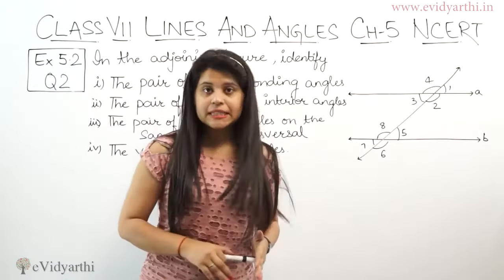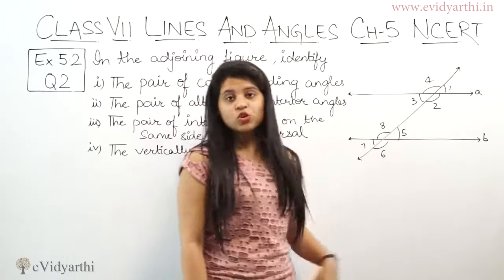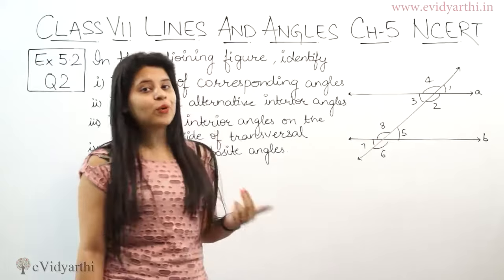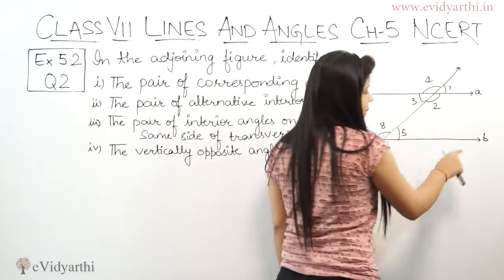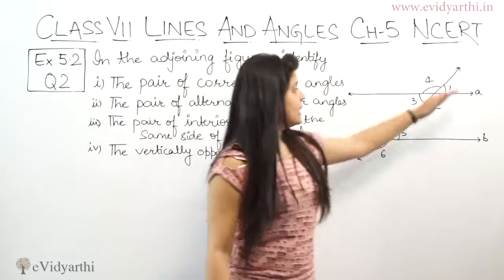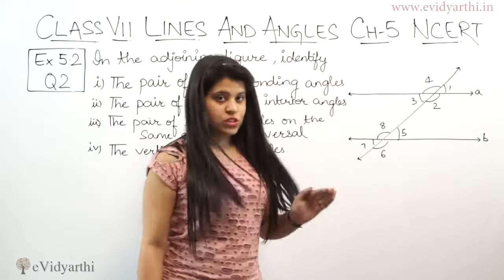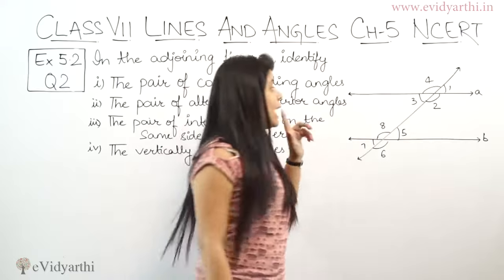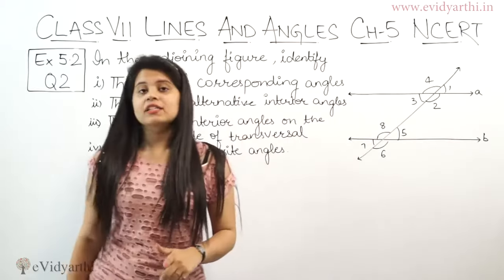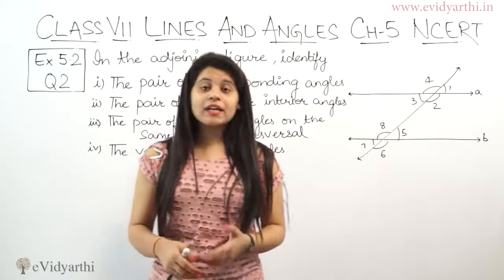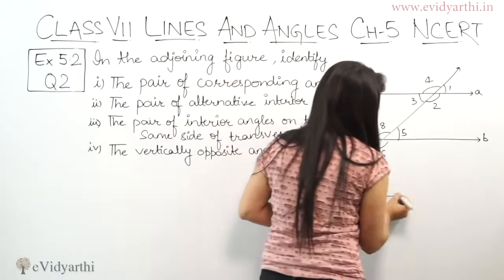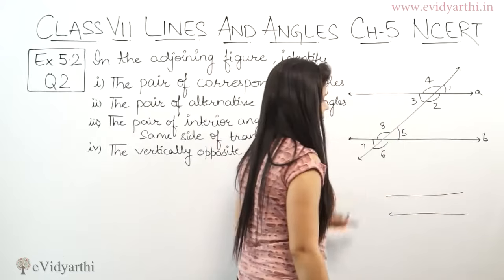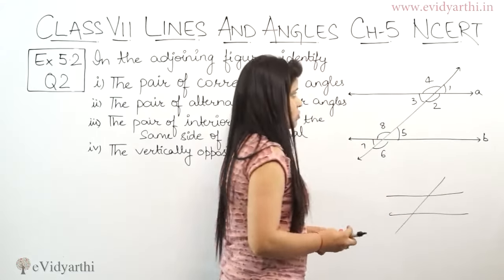This means which corresponding angles are in this figure you need to identify. As you can see, A and B are parallel lines, and this line is the transversal which intersects them. What are corresponding angles? Those at the same positions. I've drawn two parallel lines here and this is the transversal.